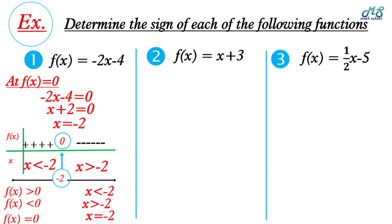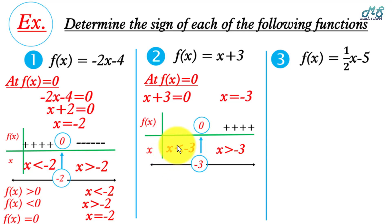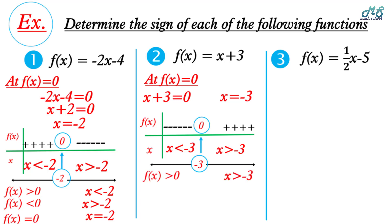Number two, f(x) = x + 3. Put f(x) = 0, we get x = -3. At x = -3, f(x) = 0. At the right, x > -3, the sign is the same as the coefficient of x, which equals 1, so it's positive. At the left, x < -3, it's the opposite sign, which is negative. So f(x) > 0 if x > -3, f(x) < 0 if x < -3, and f(x) = 0 at x = -3.